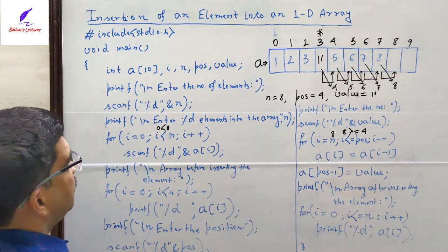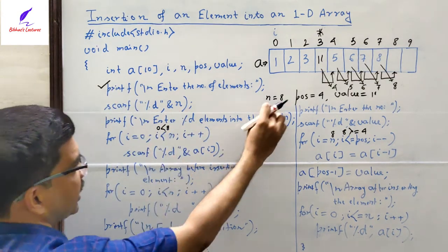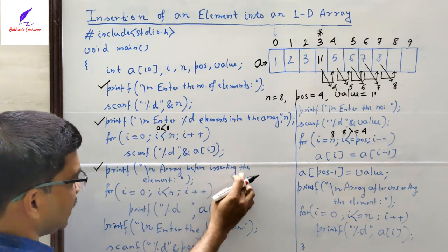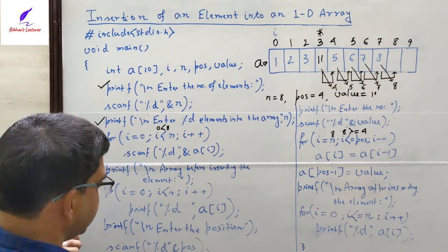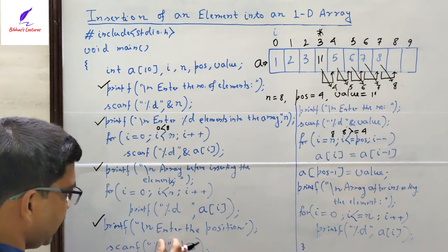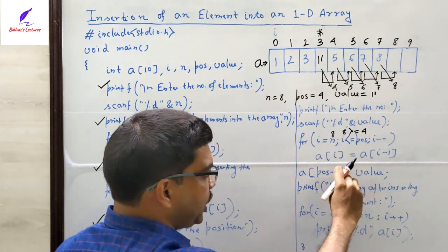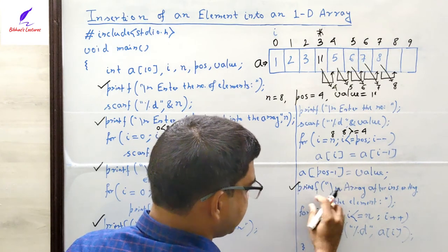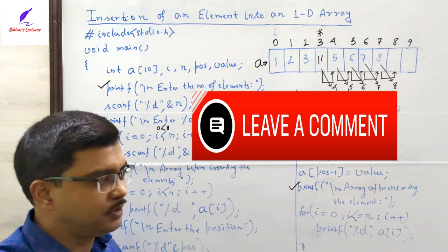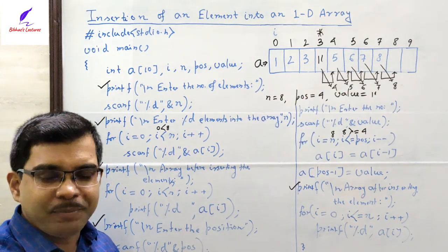When the program runs, first it prints 'enter the number of elements' and scans 8, then prints 'enter 8 elements into the array' and takes the 8 values. Then it prints the array before insertion, asks for the position and value, executes the shifting loop, and finally prints the array after inserting — showing all 9 elements on the output screen. I hope you have understood the concept of inserting an element into an array. Thanks for watching, take care, have a nice day.